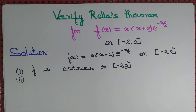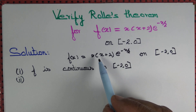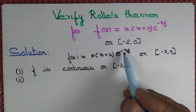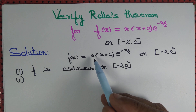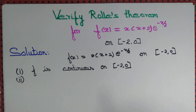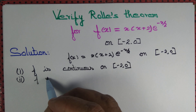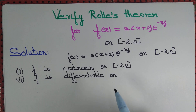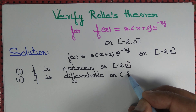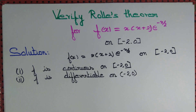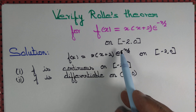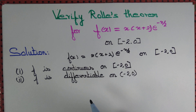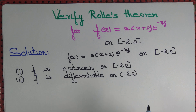The second criterion is that we want f to be differentiable. Is it differentiable? Again, it is a product of a polynomial function and an exponential function, both being differentiable, so their product is also differentiable. We don't need f to be differentiable throughout ℝ; we just need it to be differentiable on the open interval (-2, 0). Since it is differentiable throughout ℝ, we can explicitly compute the derivative as well. So f is differentiable on the open interval (-2, 0).